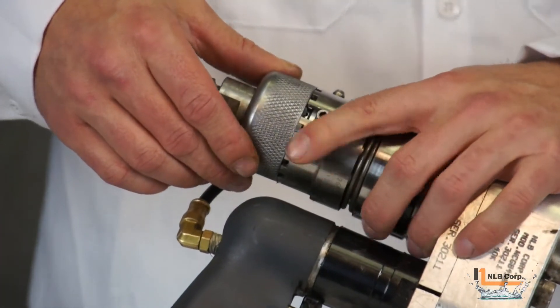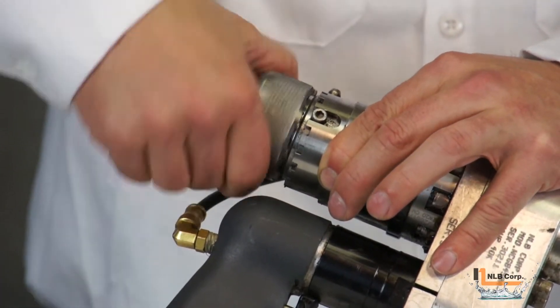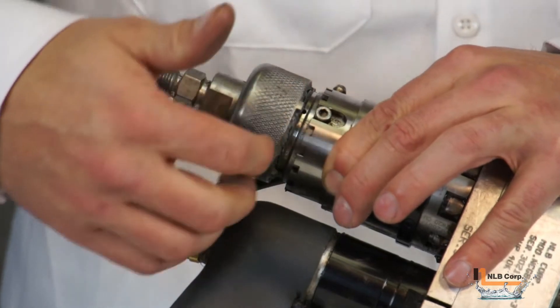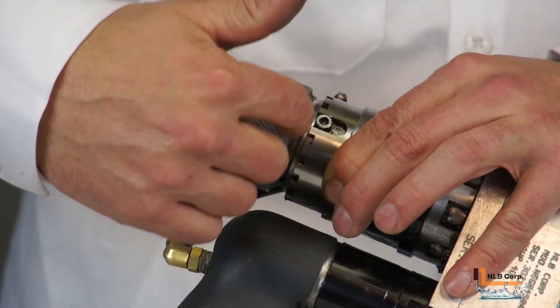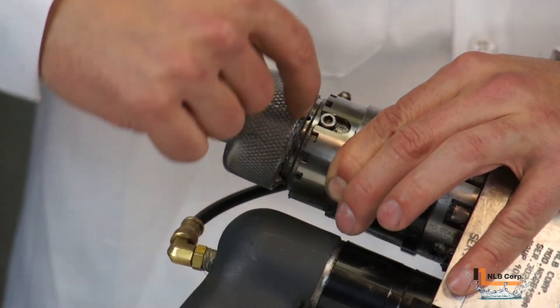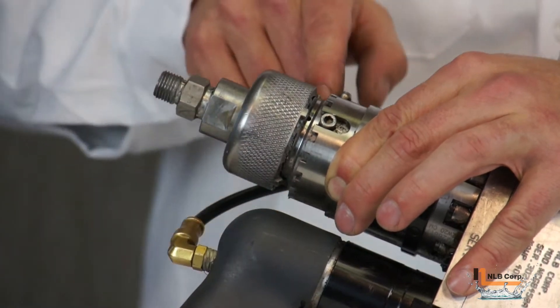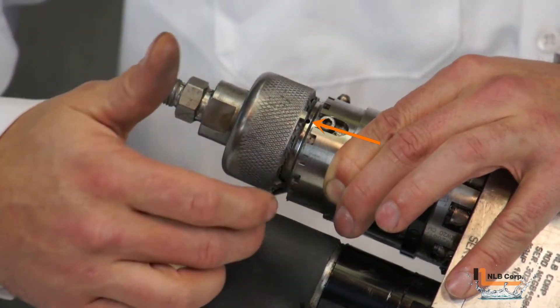The high pressure seals on your NLB NCG 8450A-3 hand lance can easily be replaced when needed. The operator can tell when the time has come to replace the high pressure seal when water begins to exit the hand lance near the inlet end cap.